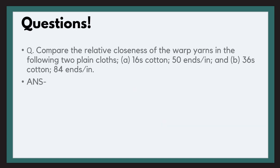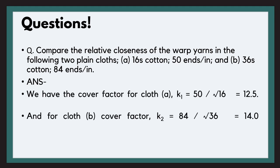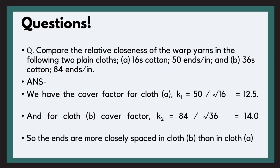Let us take a question so you will understand it better. Compare the relative closeness of warp yarns in the following two plain cloths. Cloth A has an English count of 16 and a thread density of 50 ends per inch. Cloth B has an English count of 36 and a thread density of 84 ends per inch. We will find the fractional cover factor for both warp yarns. That equals N upon under root N. So K1 equals 50 upon under root 16 equals 12.5, and K2 equals 84 upon under root 36 equals 14. So ends are more closely spaced in cloth B than in cloth A.